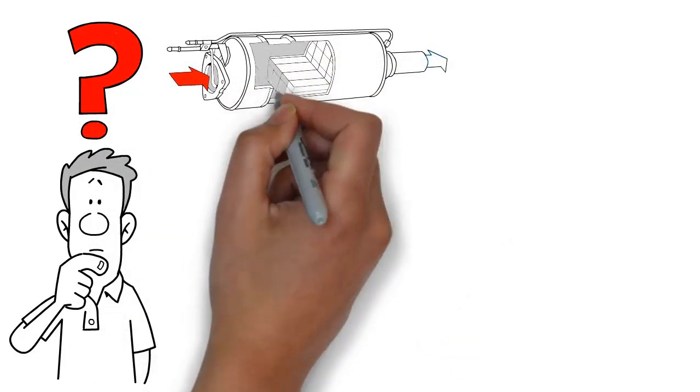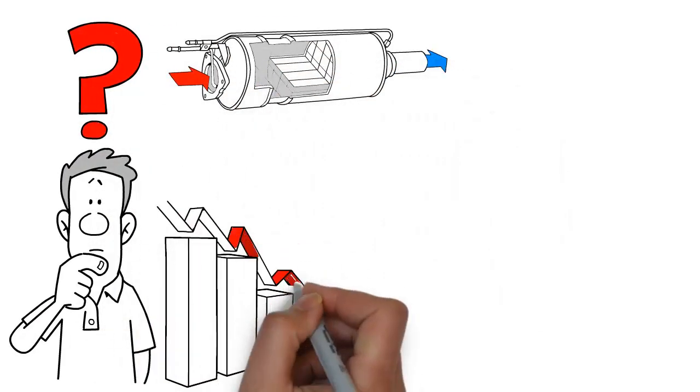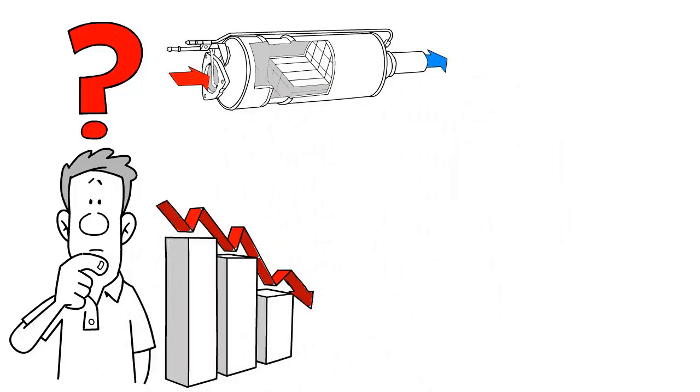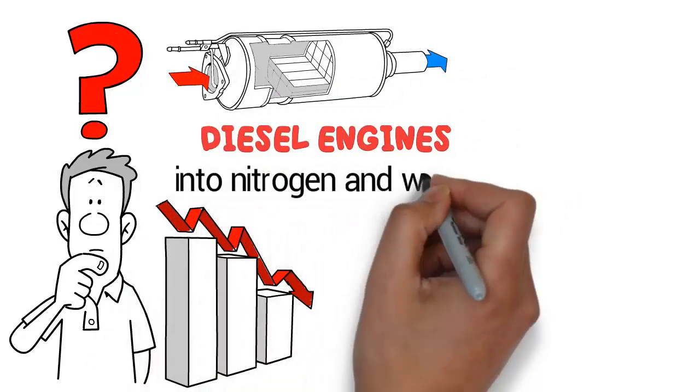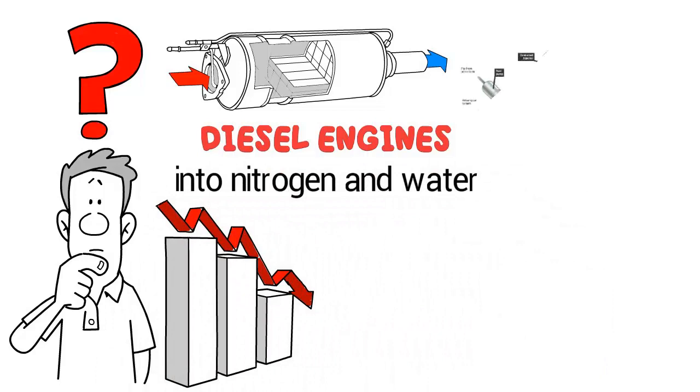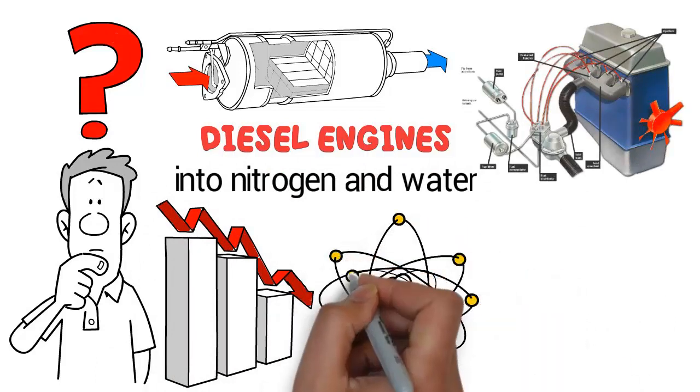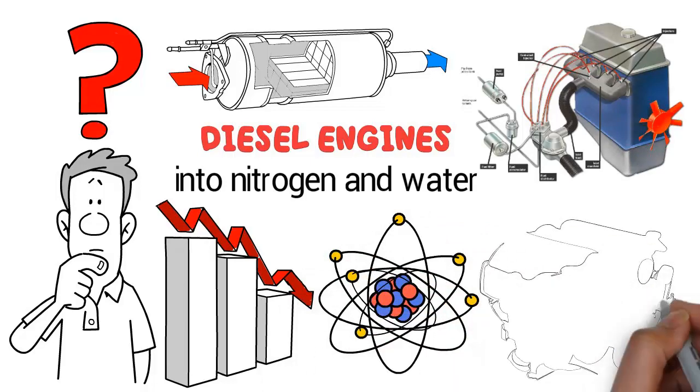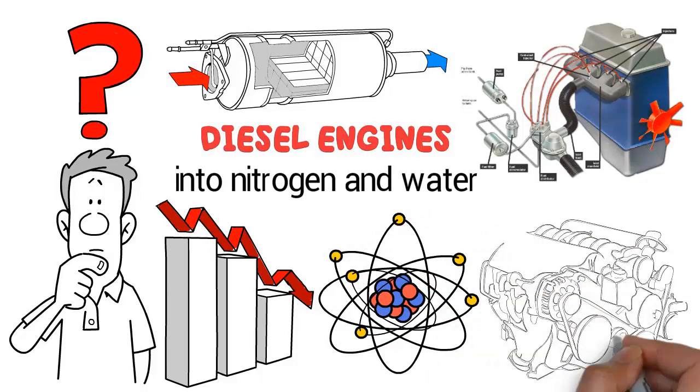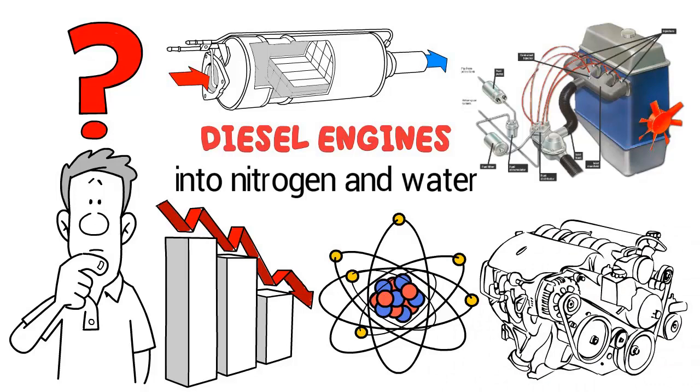SCR technology uses a catalyst system to break down dangerous NOx emissions produced by diesel engines into nitrogen and water. DEF is sprayed into the exhaust stream by an advanced injection system and then converted into ammonia on a catalyst. The ammonia breaks down dangerous NOx emissions into nitrogen and water.